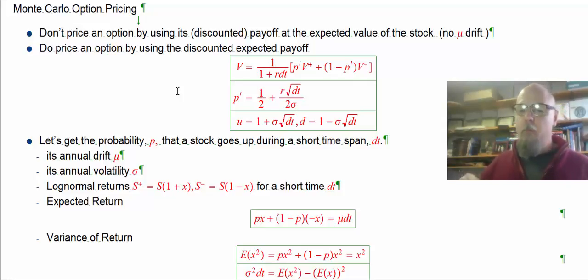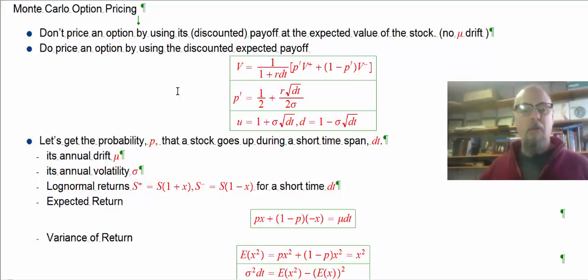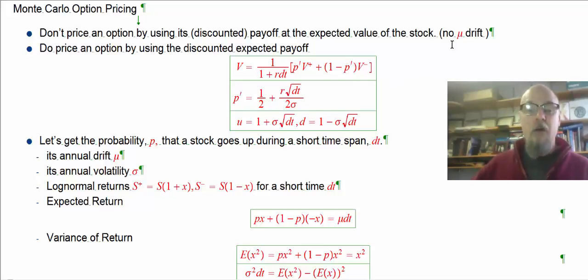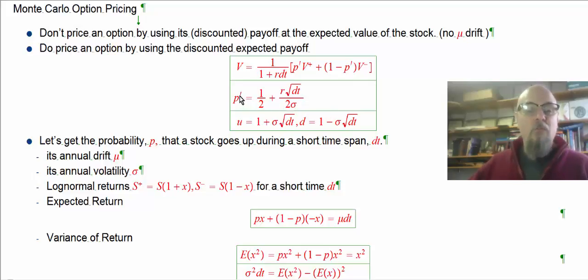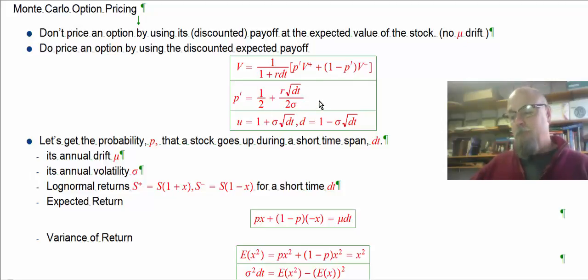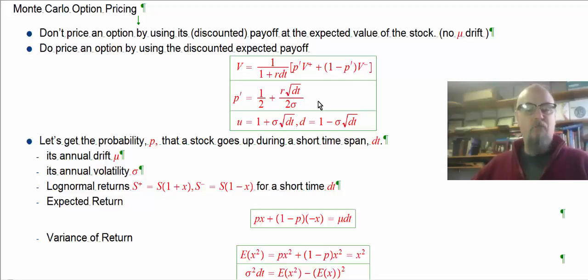What we did do when we were building those binomial trees was price an option using the discounted expected payoff — which sounds like the thing I just said not to do — but we didn't use the real probabilities. We used risk-neutral probabilities, so we hedged away the drift. The drift canceled out, and we used these risk-neutral probabilities that had the risk-free rate of return. These aren't the real probabilities that the stock goes up or down; these are the risk-neutral probabilities. Pricing with risk-neutral probabilities means we don't expect to get rewarded for taking on extra risk, so we can price with expected value.